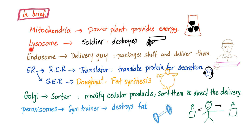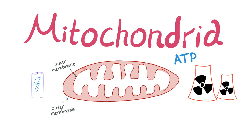Mitochondria is the powerhouse. Lysosome — the soldier. Endosome — the delivery guy. Rough endoplasmic reticulum — the translator and the uber. Smooth endoplasmic reticulum — the donut. Golgi — the sorter. Peroxisomes — the gym trainers. So let's start with mitochondria.